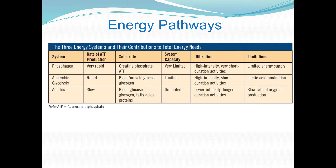Now we're looking at the energy pathways. We have three primary ways of generating energy in the body. Keep in mind we have three primary energy pathways and three main types of muscle fibers: type 1, which are aerobic slow twitch; type 2A, which can be either anaerobic or aerobic — they can produce energy with or without oxygen; and type 2B muscle fibers, which are purely anaerobic. That coincides with the three energy pathways.